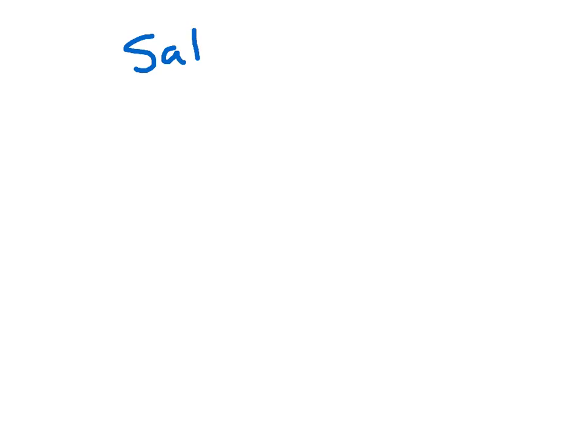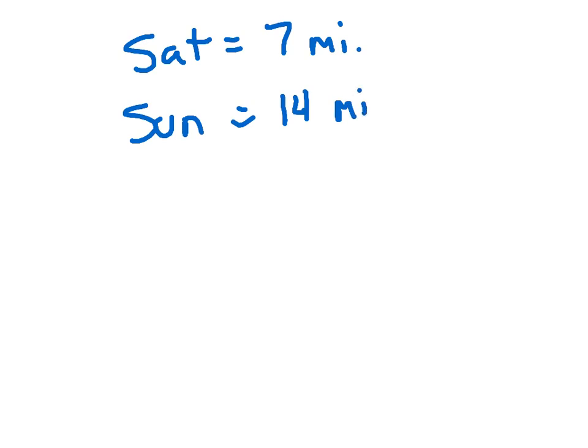So let's go ahead and fill in some of that missing information — you're going to have to do that on some of your problems in the lesson tomorrow. Let's say on Saturday he rode 7 miles. So on Sunday, if he doubled that, he rode 14 miles. If you know how far he rode on Saturday, you can figure it out for Sunday.